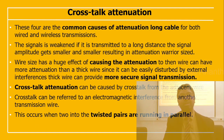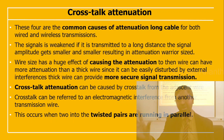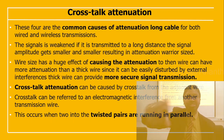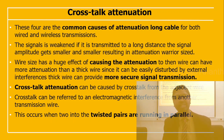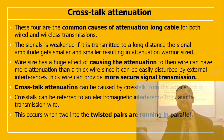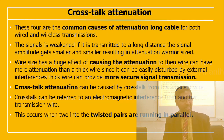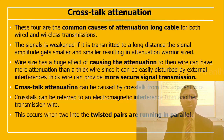For long cables — both wired and wireless — the signal is weakened over long distances as the amplitude gets progressively smaller. Wire size also affects attenuation: a thinner wire has more attenuation than a thicker wire. A thin wire is more easily disturbed by external interference, while a thicker wire provides more secure and stable signal transmission.